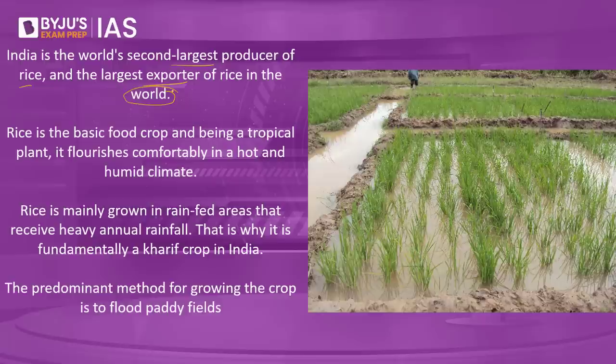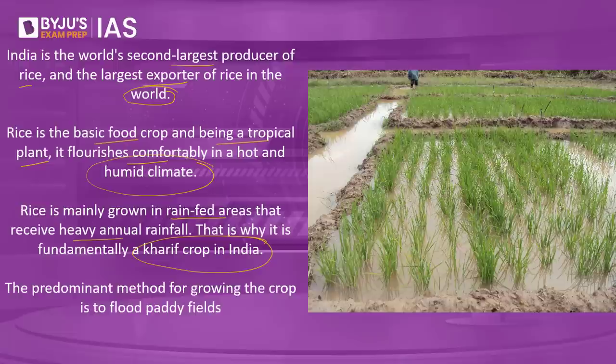Rice happens to be the basic food crop and, being a tropical plant, it flourishes comfortably in a hot and humid climate. Rice is mainly grown in rainfed areas that receive heavy annual rainfall, which is why it is also called the kharif crop in India. Another question from the preliminary examination point of view: which are the kharif crops in India? Please put them in the comment section.